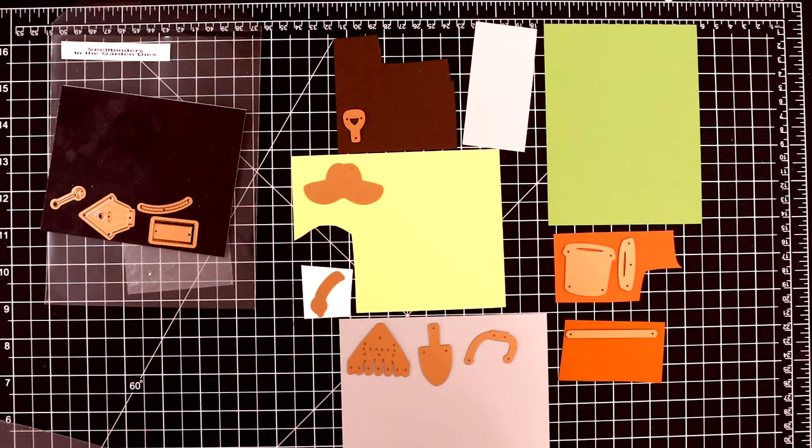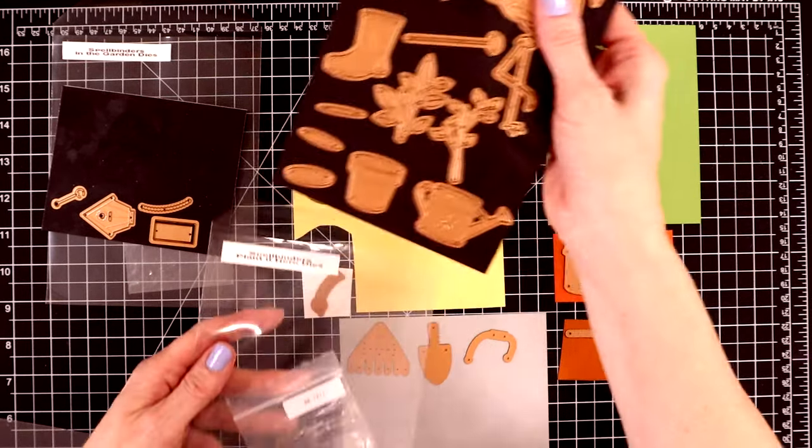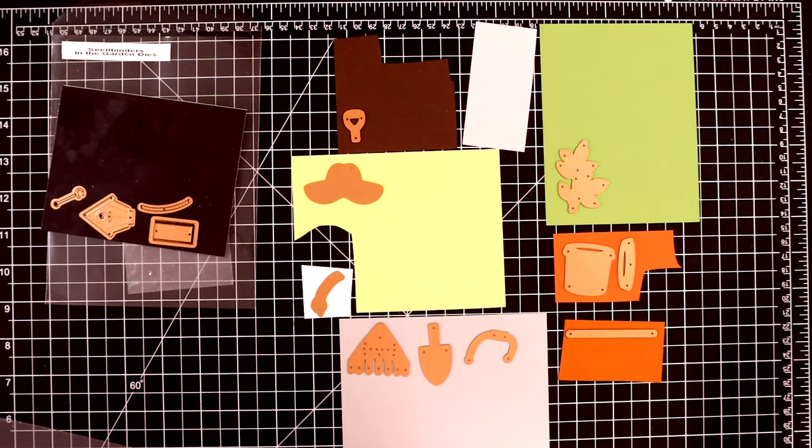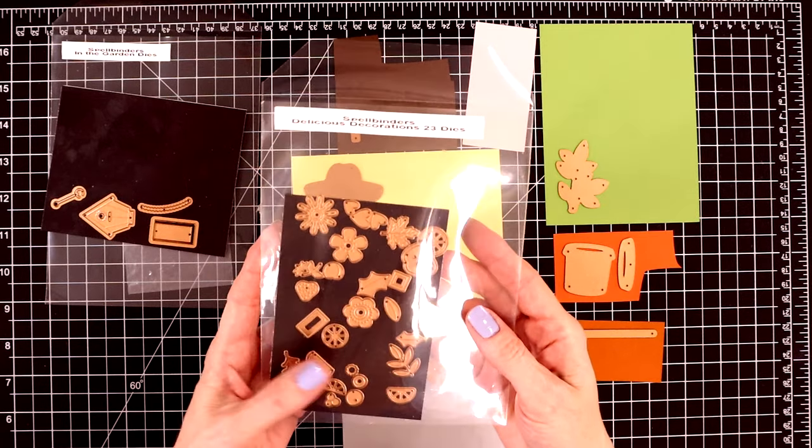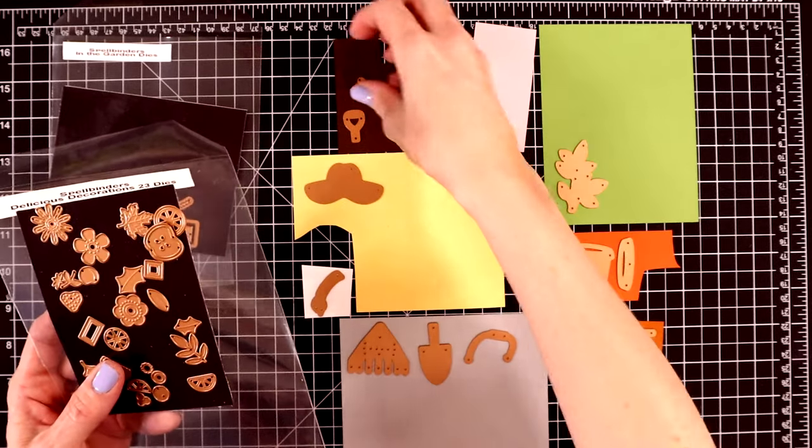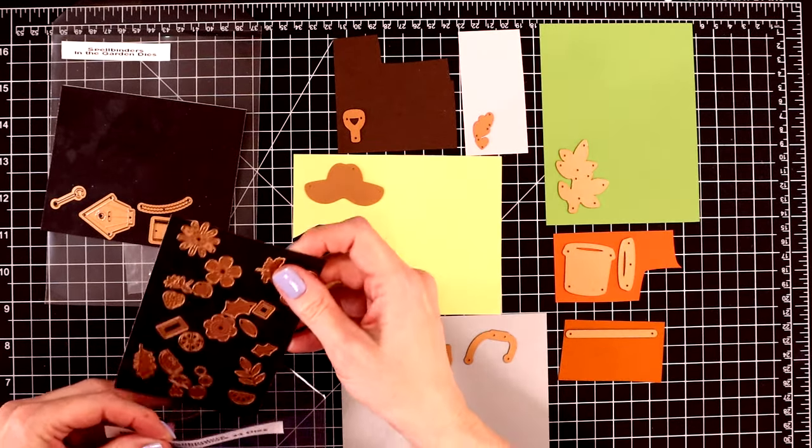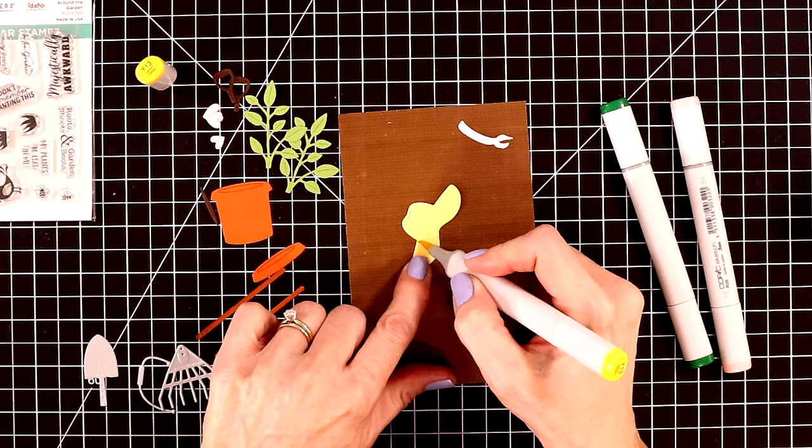I'm going to pull in one of the plants from the Plant It Here set and cut out two of these with some of the green. I believe this is rainforest green. The yellow is chamomile. I'm going to use the hearts from the Delicious Decorations die set and cut them out with a little bit of pink sand cardstock. The brown is timber cardstock. So I'll cut them out off camera.